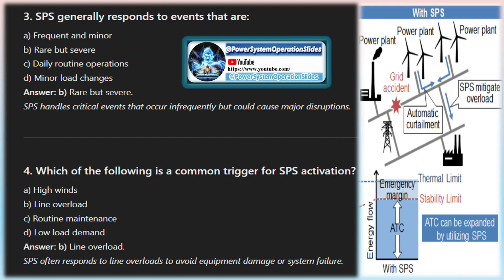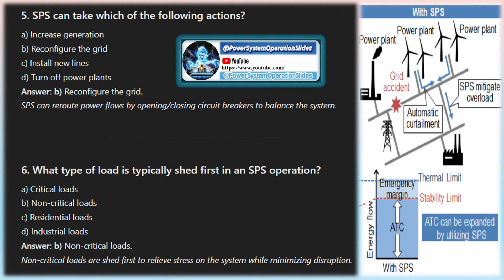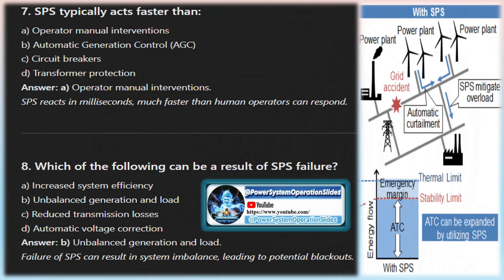In order to cope with and minimize the impact of out-of-range contingencies — in particular to prevent total system collapse — system protection schemes have been developed and implemented by many utilities. These schemes include a set of coordinated and mostly automatic measures to ensure fast reaction to large disturbances and to avoid their propagation through the system. System protection schemes are designed to initiate the final attempt at stabilizing the power system when widespread collapse is imminent, generally designed to contain transient instability, oscillatory instability, frequency instability, and voltage instability.